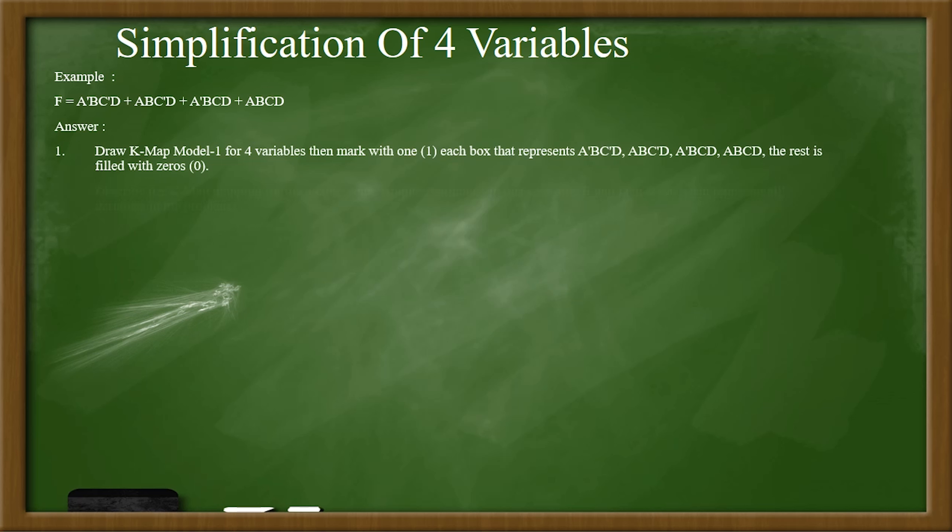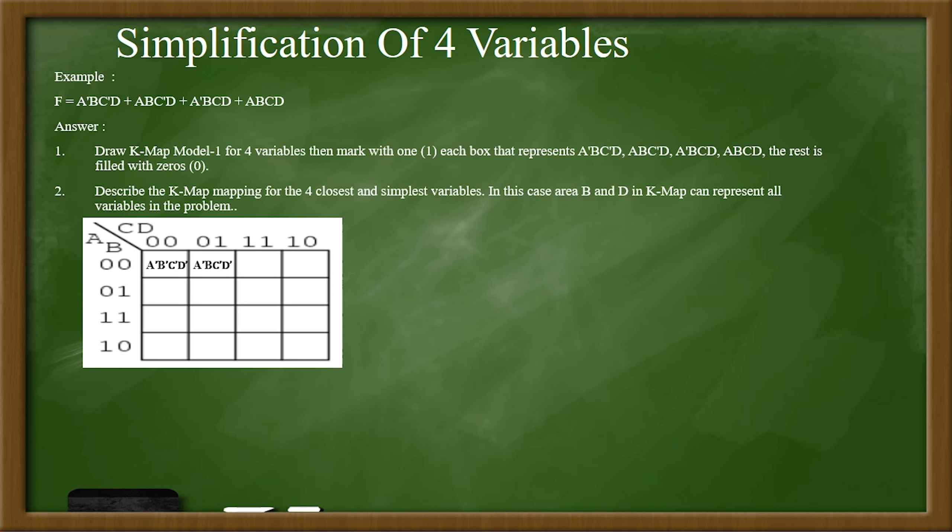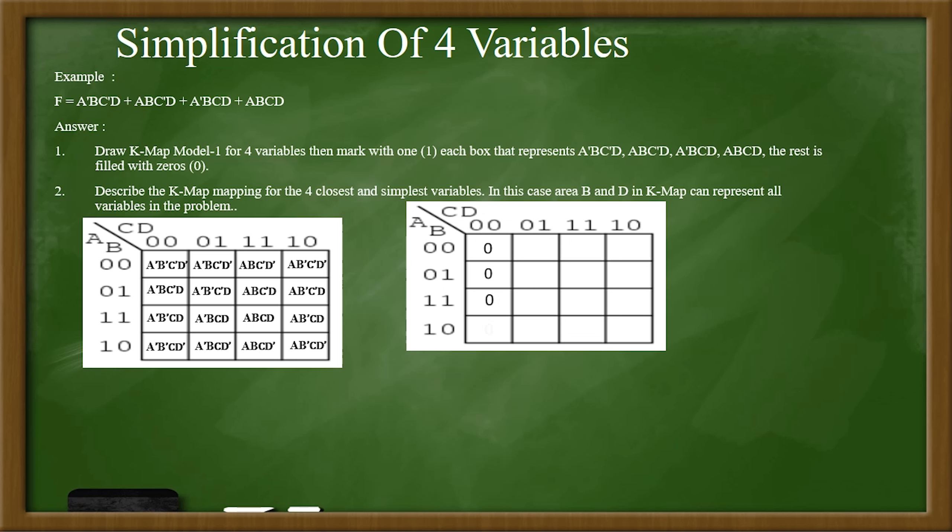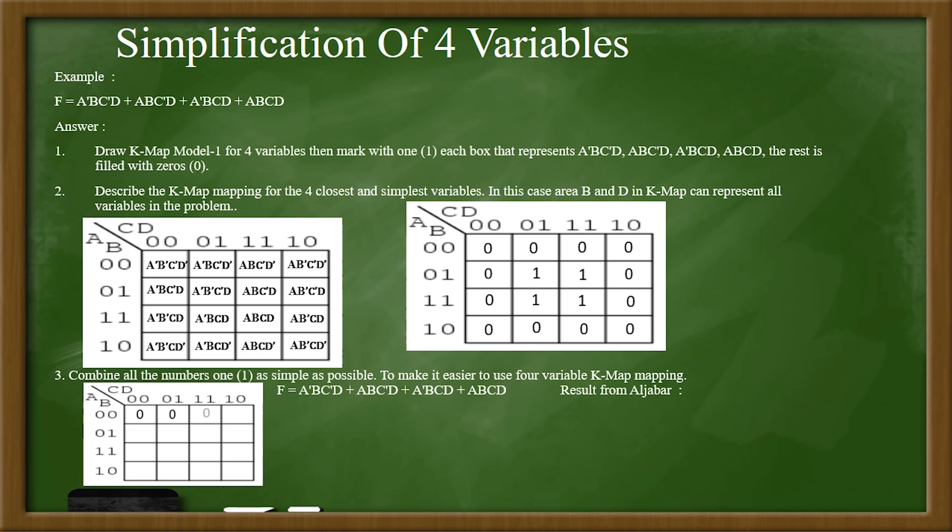Then we got the four variable simplification, in which, as like before, we fill the maps with one on the corresponding cells, as what we see in here. And then there is a group there that we can make in the middle, a good square one. Based on that, we simplify it and the answer is BD.